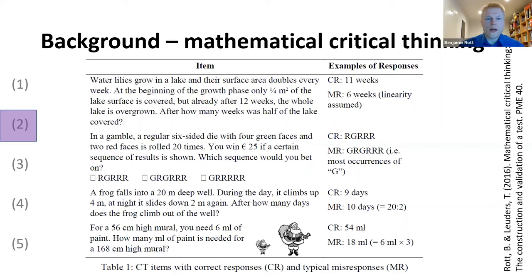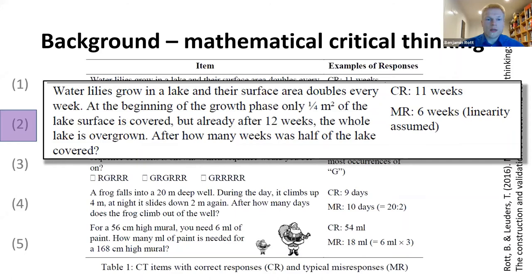Here you can see some examples. To highlight one from Frederick's CRT: you have water lilies that double the surface they cover each week. After 12 weeks, the whole lake is overgrown. After how many weeks was half of the lake covered?